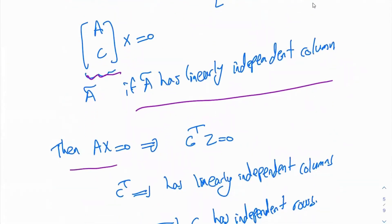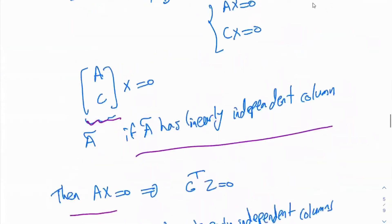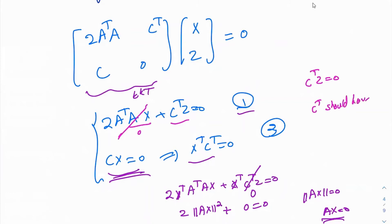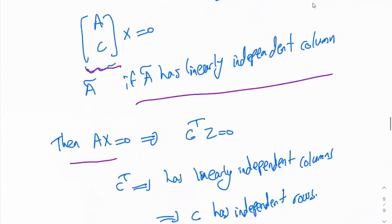Now, if we assume that AX is equal to 0 — we derived it here — then what happens? If AX is equal to 0, this expression is 0, and therefore C transpose Z is equal to 0. I want to say that Z equal to 0 is the only solution here. Therefore, C transpose should have linearly independent columns, which means C should have linearly independent rows.